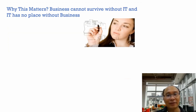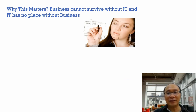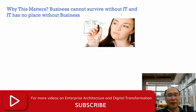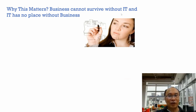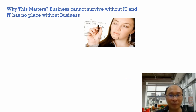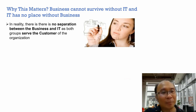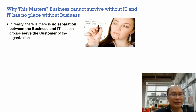Business cannot survive without technology, and technology has no place without business. Business and technology strategy are on an equal playing field. The message is for both sides: the business team cannot ignore IT, and the IT team cannot ignore the business. Some organizations have changed their division name from IT to BT — business technology — so the IT department starts realizing it needs to engage with the business more. There is no separation between business and IT, as both groups serve the customer of the organization.